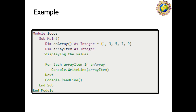The second Console.WriteLine at the end works like the getch (get character) function in C language. In C language, getch holds the output screen at runtime. Similarly, Console.WriteLine here holds the output screen at runtime. Then 'End Sub' and 'End Module' close the program. This completes the example of the For Each Next loop.